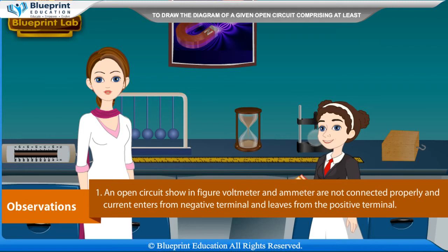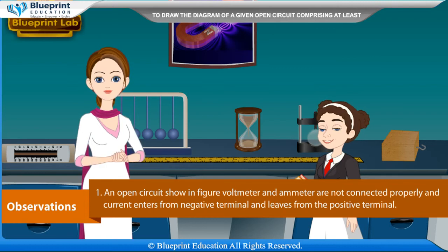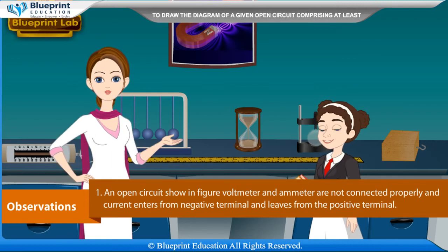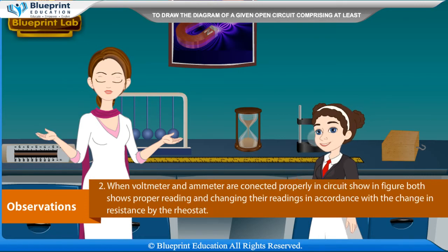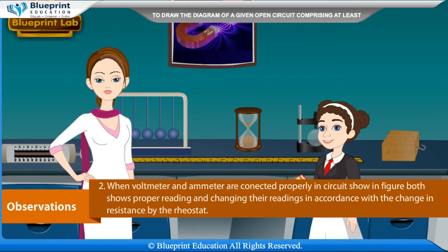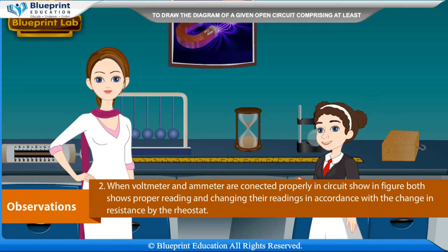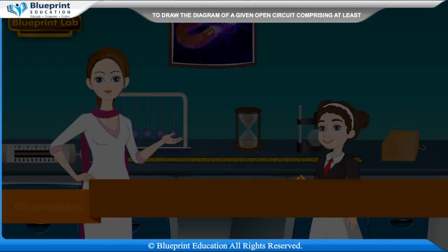Observation: In the open circuit shown in figure 2, the voltmeter and ammeter are not connected properly and current enters from the negative terminal and leaves from the positive terminal. When the voltmeter and ammeter are connected properly in the circuit shown in figure 2, both show proper readings and change their readings in accordance with the change in resistance by the rheostat.